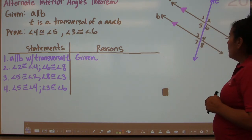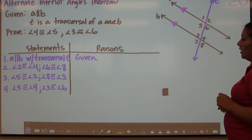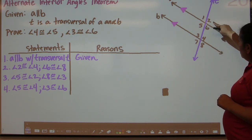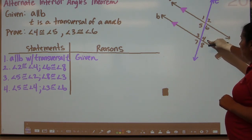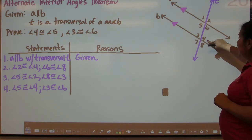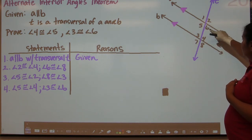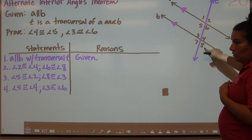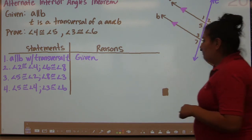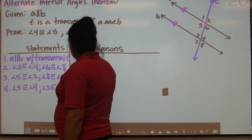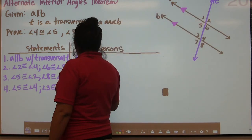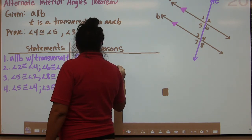In Step 2, angle 2 and angle 4 are corresponding angles, and also angles 6 and 8 are corresponding angles. So the reason for Step 2 is the corresponding angles postulate.